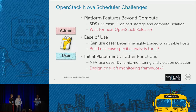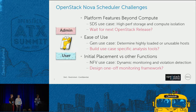Take a software-defined storage use case — say you want to add high-performance storage and you desire compute isolation because storage and compute are running on the same node. Right now in the current paradigm, we have to wait for the next OpenStack release to make it happen — basically waiting out six months. The next point is around ease of use: if you're looking at a generic use case to determine a highly loaded or unusable host, you need to build custom tools, and that requires writing code.